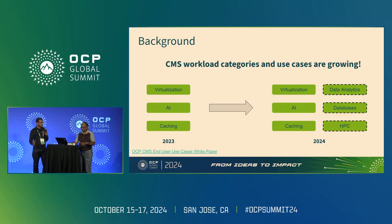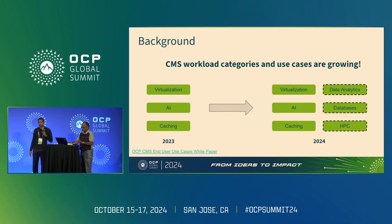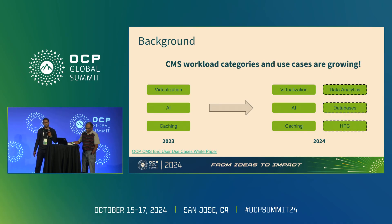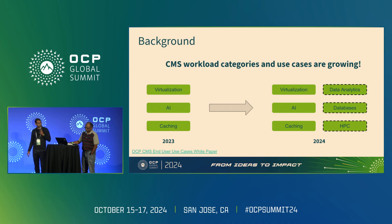As we talked about in the previous session during the updates, we started with three workload categories and three very specific use cases last year, focusing on virtualization, containerization, AI, and caching. This year we decided to cast a wider net and include more categories of workloads, and within those also focus on other specific workloads such as Cassandra, Spark, and Redis, which you'll hear about during the rest of the sessions.